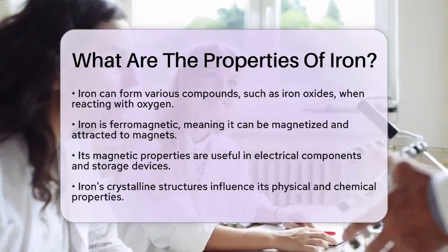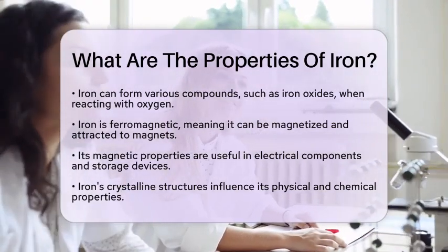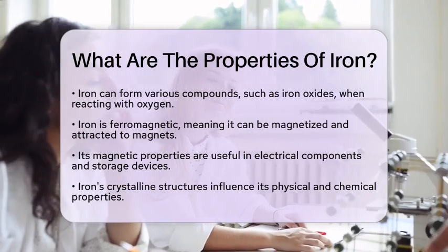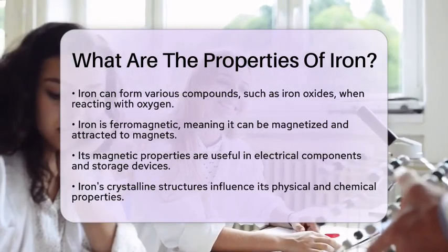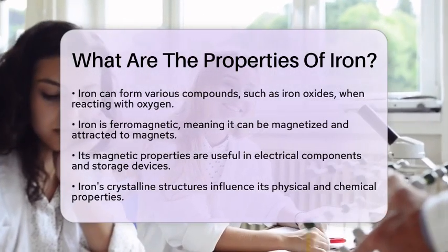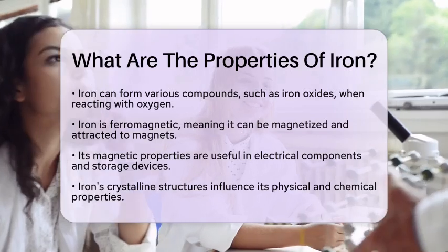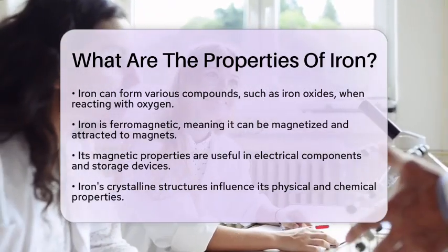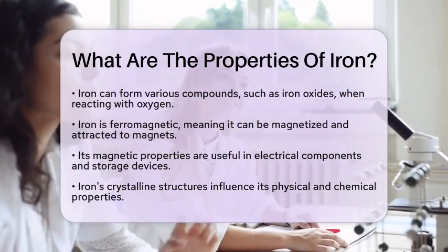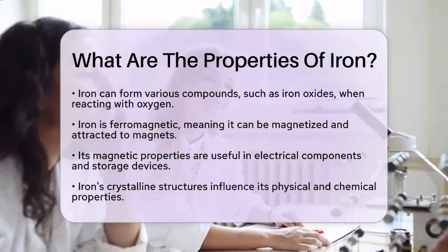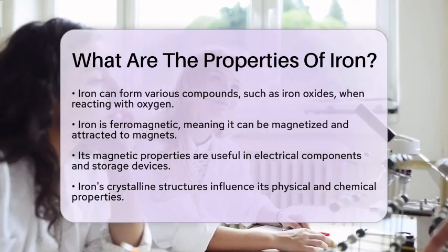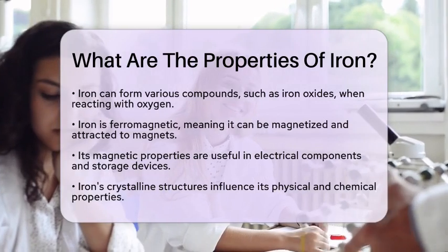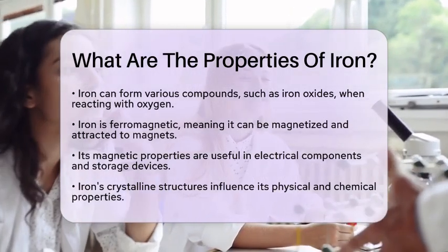In the context of material science, the crystalline structures of iron are particularly interesting. The ability of iron to form different crystal structures under varying conditions influences its physical and chemical properties. This aspect is vital for material science, as it affects the performance of iron-based materials in various applications, such as steel production.